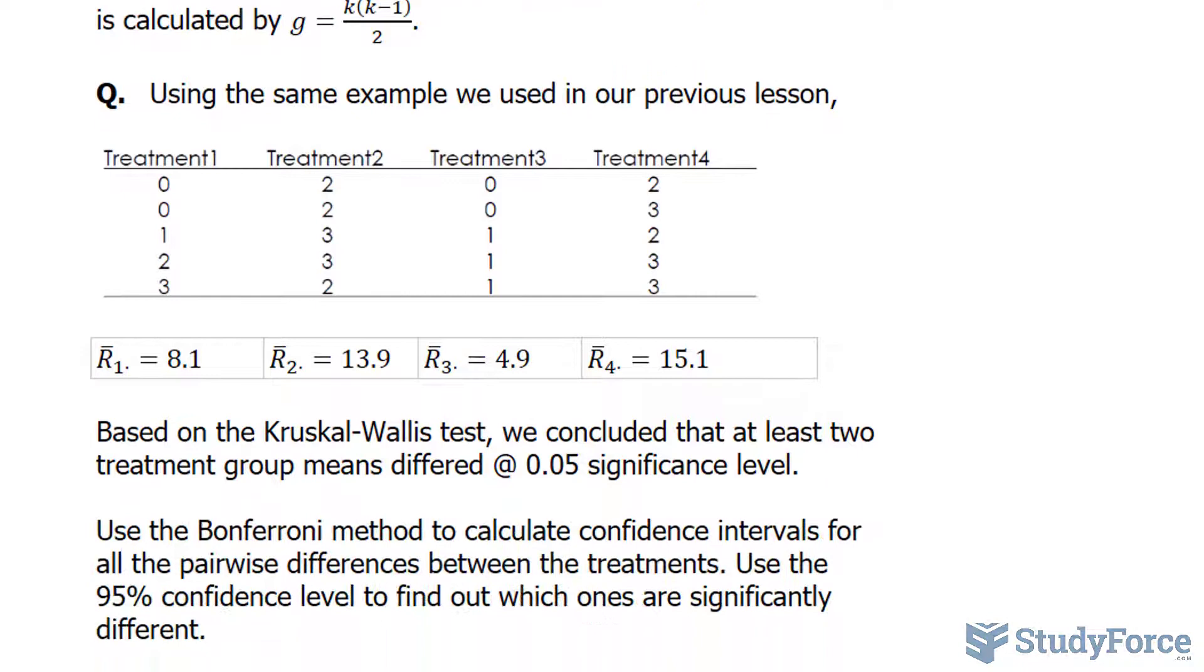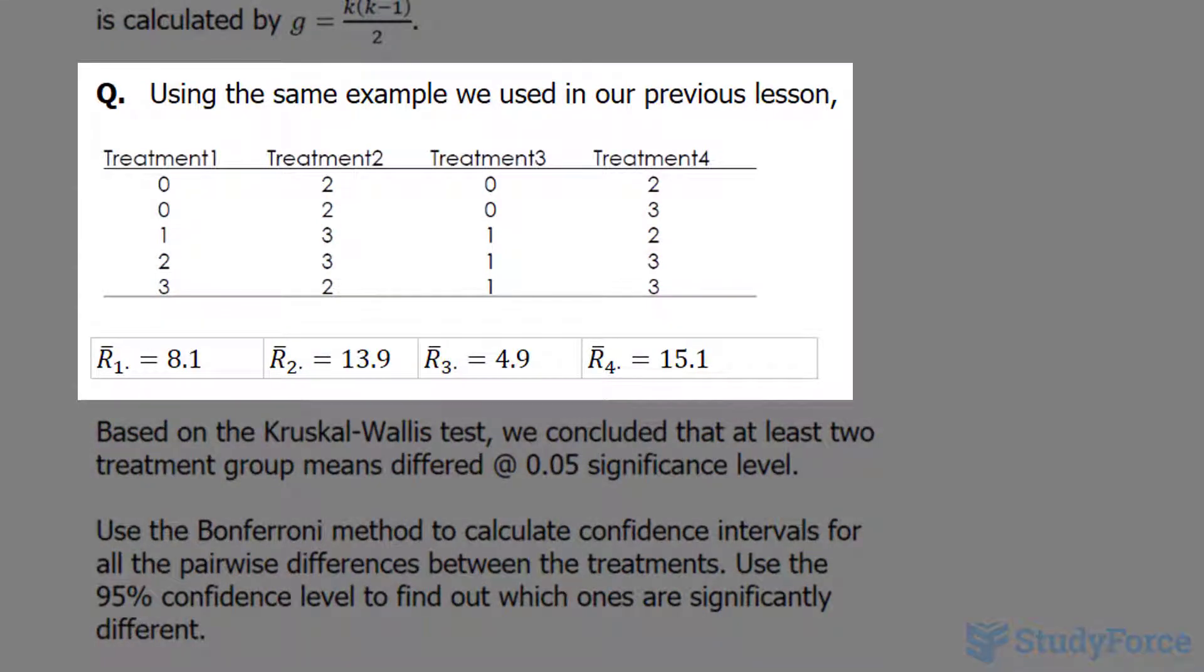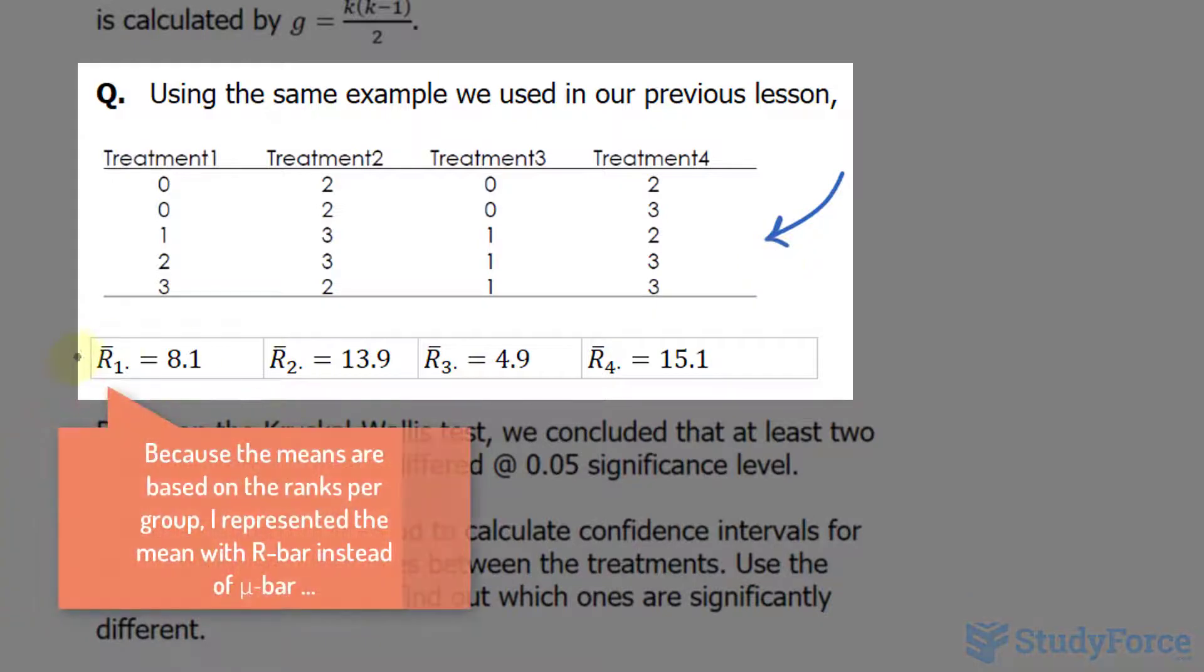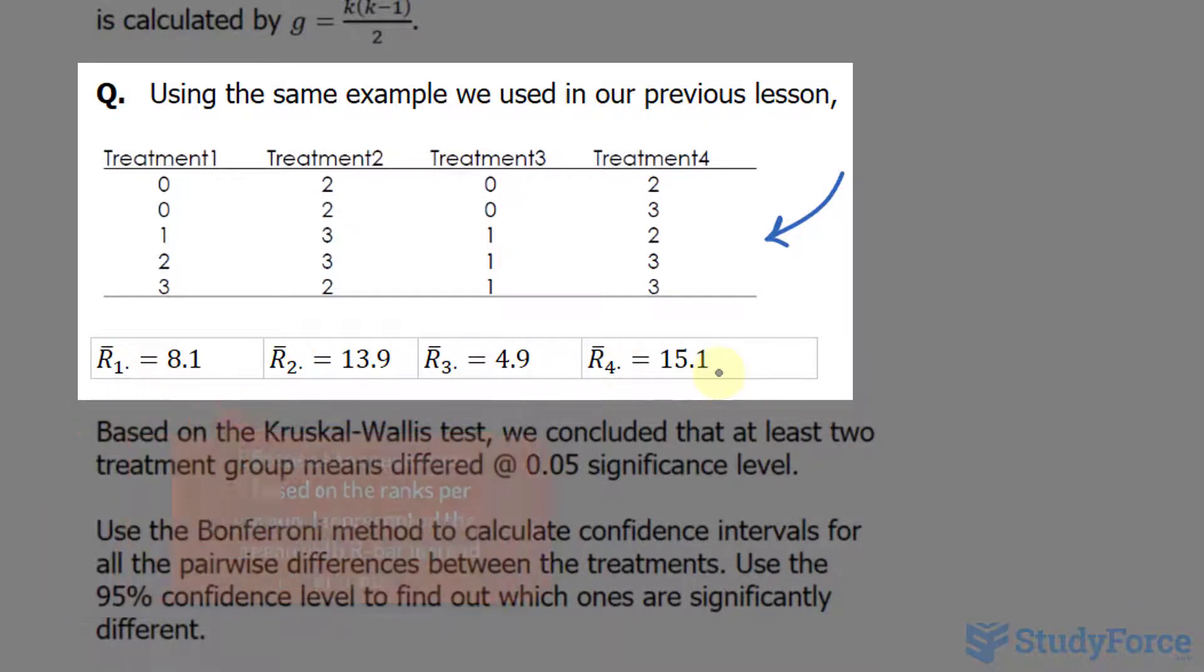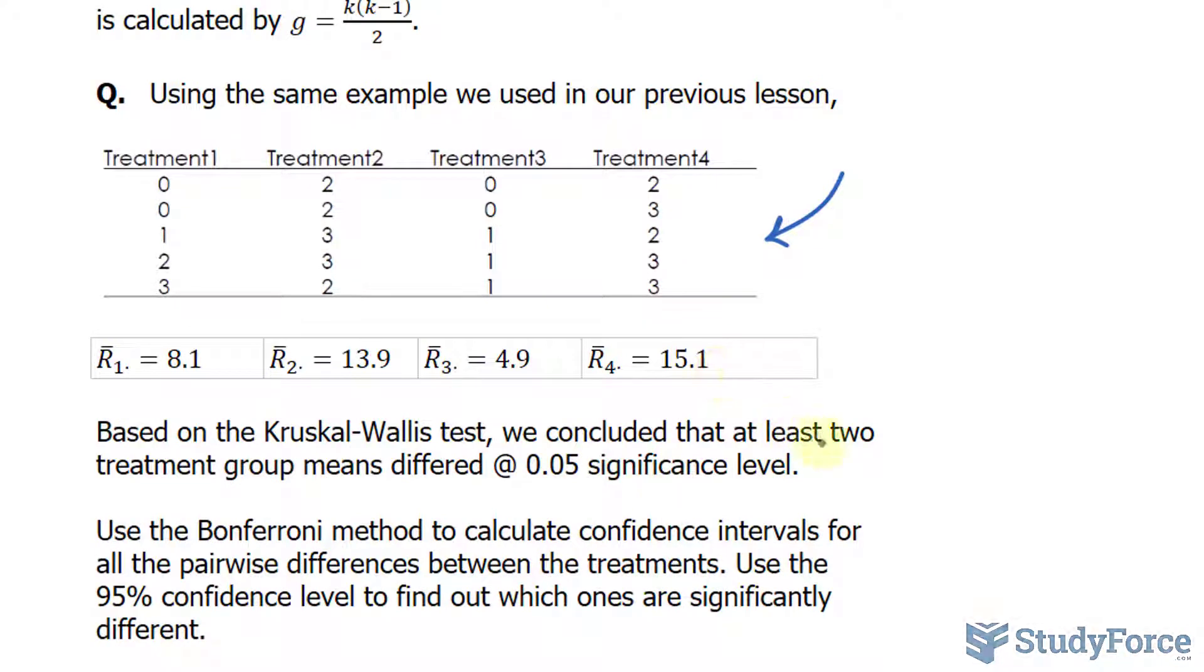The question reads: using the same example we used in our previous lesson, and in our previous lesson we actually performed the Kruskal-Wallis test using this data. The Kruskal-Wallis test is based on ranking the data from lowest to highest. And what we eventually found was the means of each treatment and I wrote them down underneath here. You'll need this for the Bonferroni test. Based on the Kruskal-Wallis test, we concluded that at least two treatment group means differed at 0.05 significance level. That's our alpha value. Use the Bonferroni method to calculate confidence intervals for all pairwise differences between the treatments.